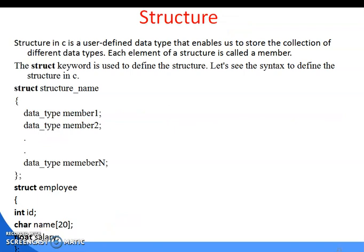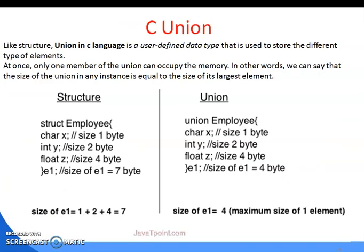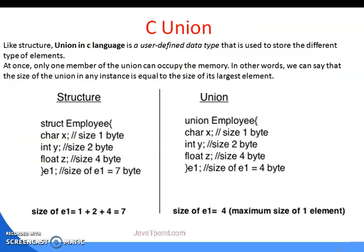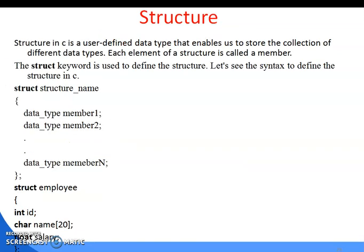Next is structure. Structure and union are two different things. Structure is used to store a collection of different data types. Each element of a structure is called a member, and the keyword 'struct' is used to define a structure.